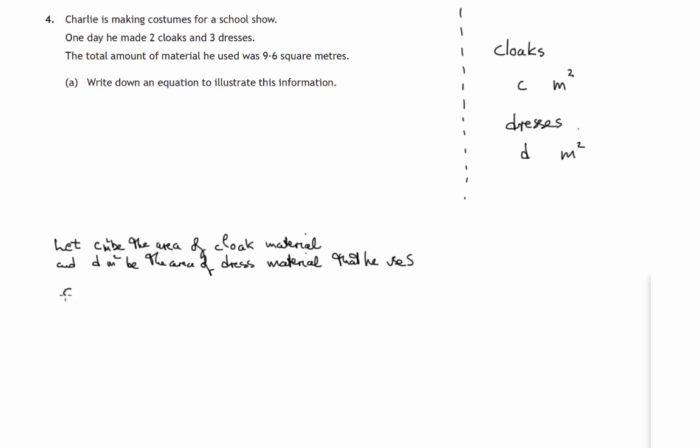So part A says write down an equation to illustrate this information. So if he makes two cloaks, each one using C square meters, then he'll have used twice C square meters in total.